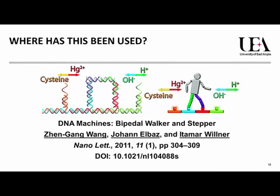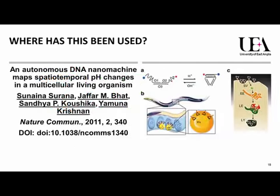So where has this been used and how have different people utilised this type of science? An example from 2011 from the Wilna group showed that you can actually get a piece of DNA to walk using these different types of conditions. Another example from the Krishnan group showed that you could monitor pH changes in a live organism using these types of switches. There are many other examples, but these are two clear ones to highlight.